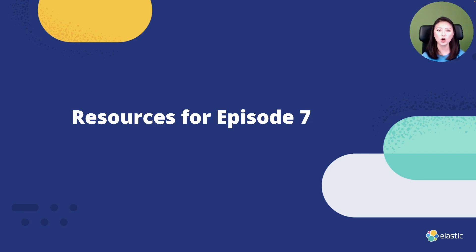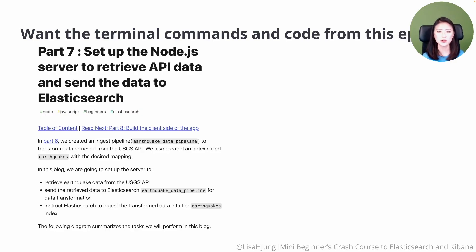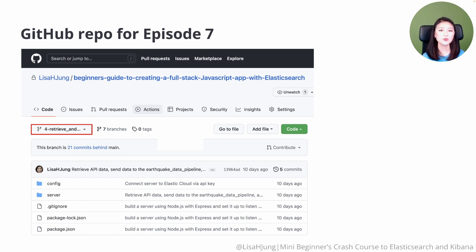Let's talk about the relevant resources for this episode. All the links to these resources are included in the description box. Throughout the episode, I'll be going over terminal commands and code. If you want to copy and paste these, check out part seven of the blog series as these are all included there. We also have a GitHub repo for episode seven, so check out branch four for the project directory from this episode.